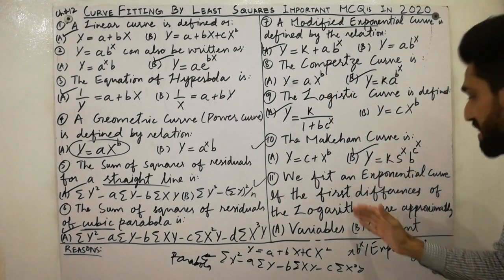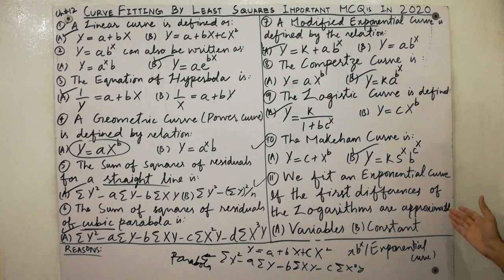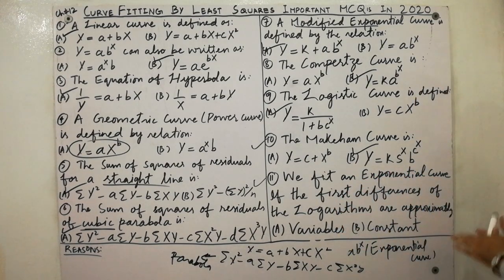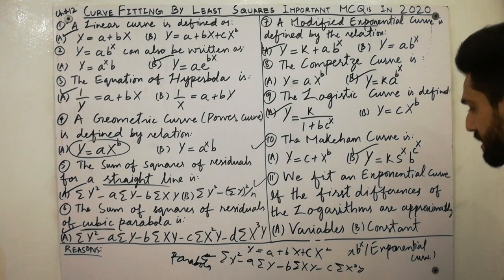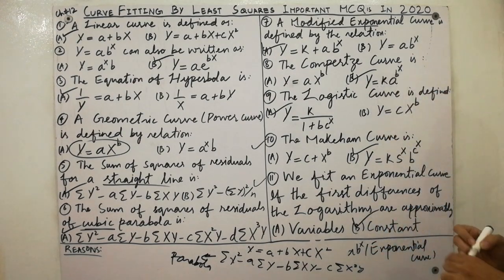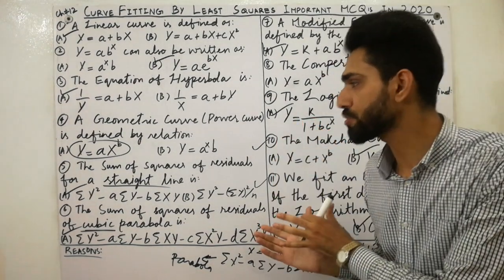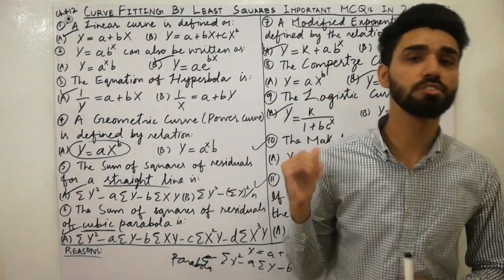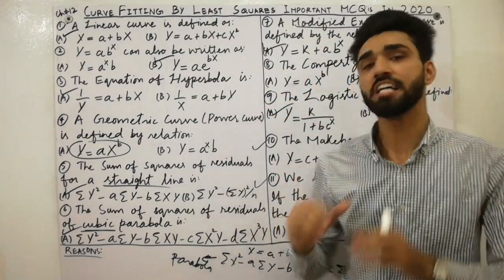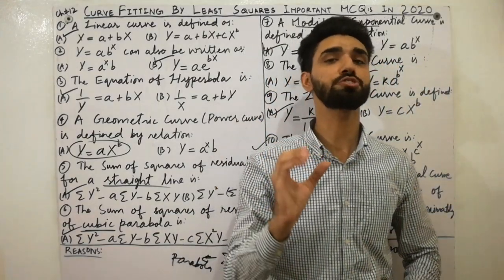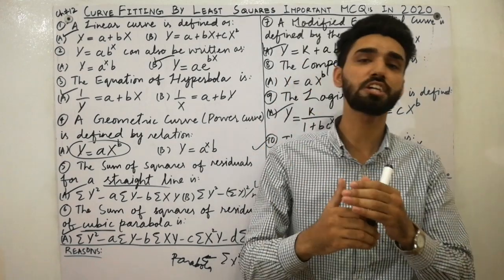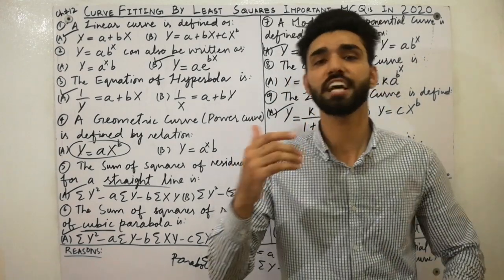The last and very important point: we fit an exponential curve if the first differences of the logarithms are approximately constant. I hope you have clear concepts. Thanks for watching. If you like this video, please subscribe to my YouTube channel and press the bell button to get notifications of my new lectures. Goodbye.